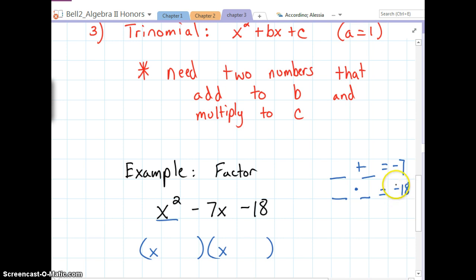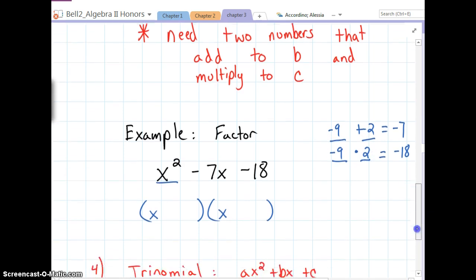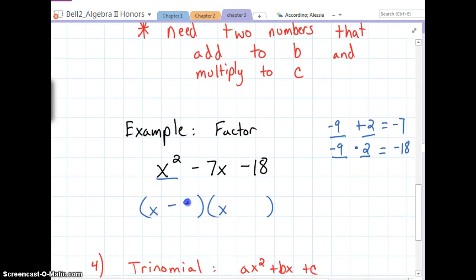Well, if we're multiplying to a negative number, we know one has to be negative and one has to be positive. And if we're adding a positive and a negative, it's almost like subtraction. So we need two numbers that multiply to 18 that differ - their absolute values differ by 7. Well, that would be 2 and 9, and the 9 is going to have to be negative, and the 2 is going to have to be positive. And so we get x minus 9 and x plus 2.